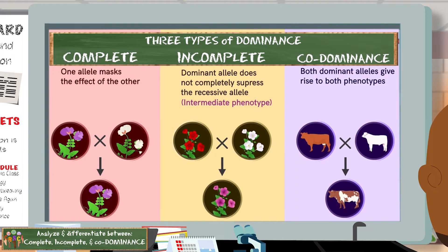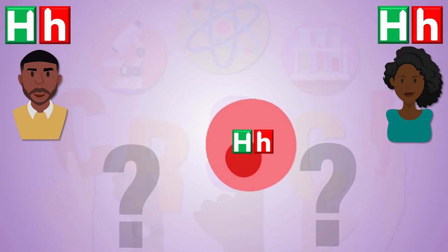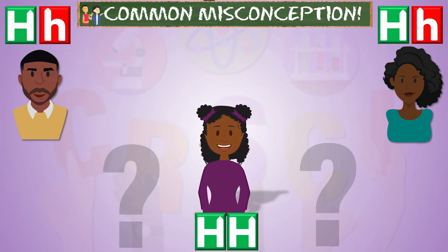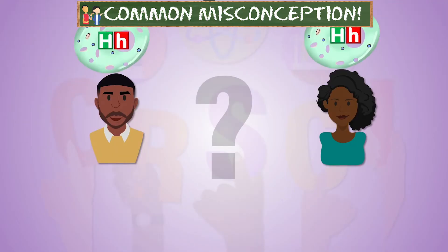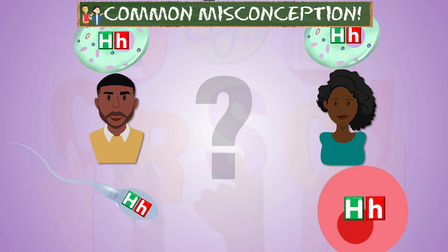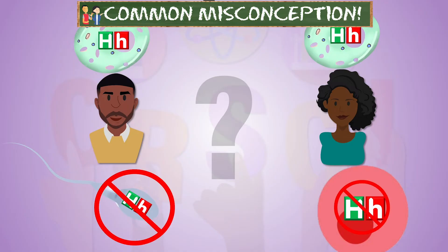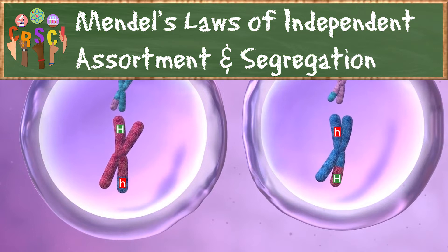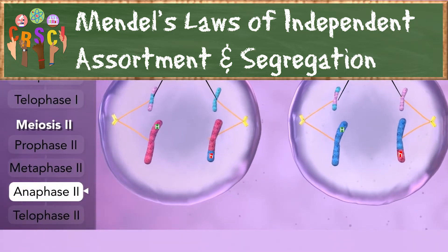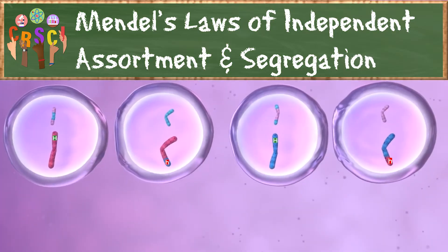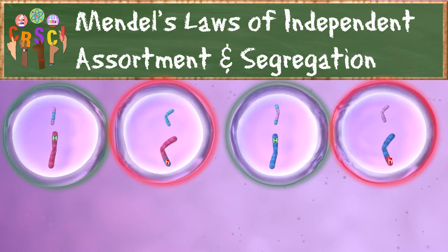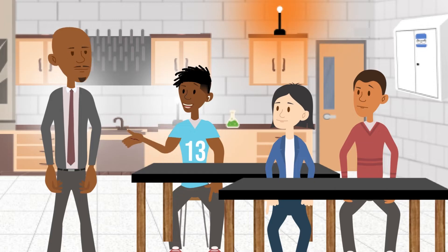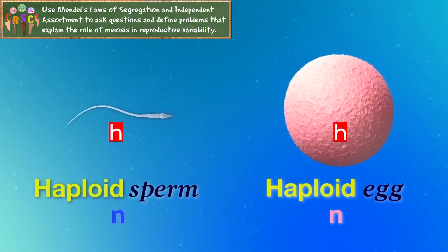If my parents' cells have both the dominant and recessive alleles, shouldn't the dominant allele have overpowered the recessive allele when my sister was conceived? Your parents' body cells have both alleles, but their sex cells — gametes — don't. When your mom's gametes were made during meiosis, the chromosomes and the alleles on them segregated and independently assorted, so her gametes had either the dominant allele or the recessive allele, but not both. The same happened with your dad's gametes, and when the egg was fertilized, that determined the genotype of the offspring.